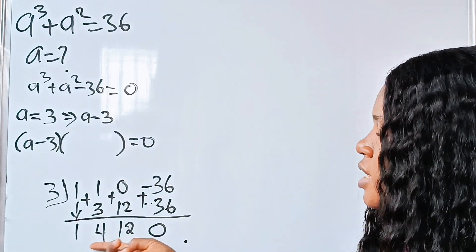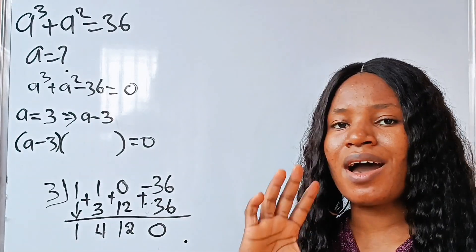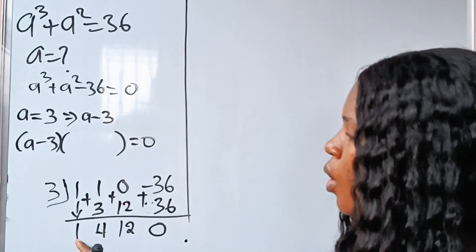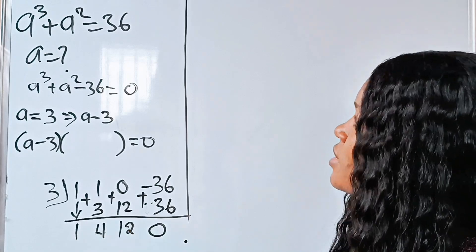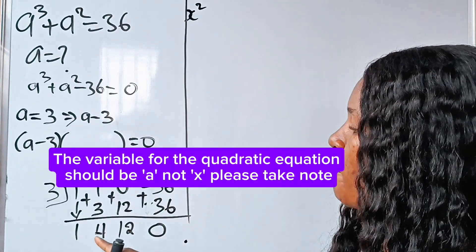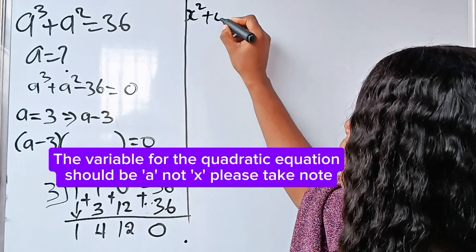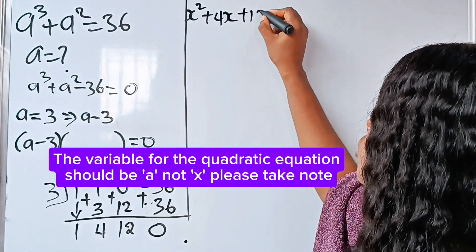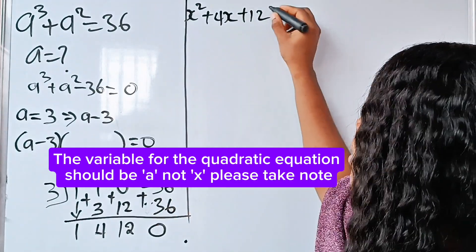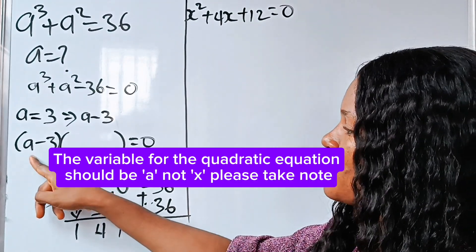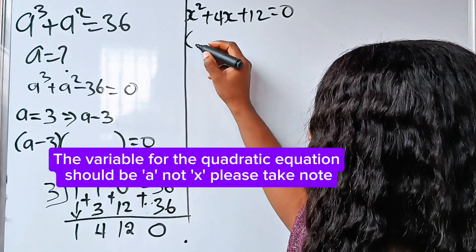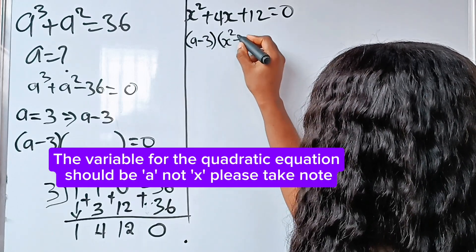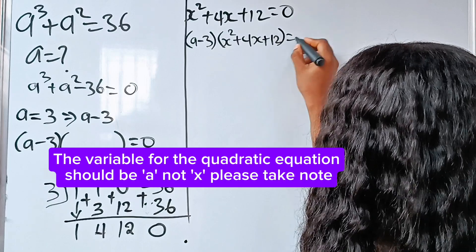The results form the coefficients of our quadratic equation. That means our quadratic equation will be in this form: 1·a squared, which is the same as a squared, plus 4a, plus 12. So we now write that (a minus 3) multiplied by (a squared plus 4a plus 12) is equal to 0.